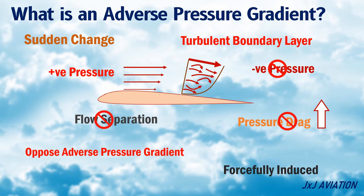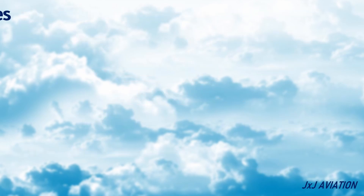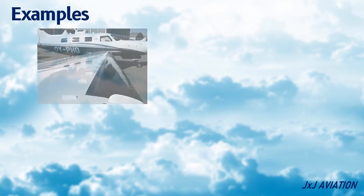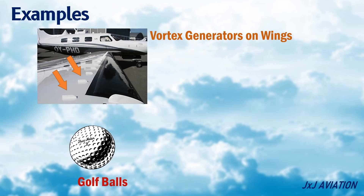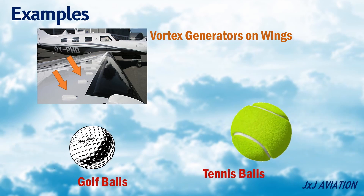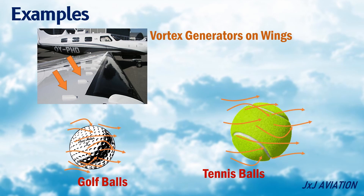Let's look at a few examples. On some wings there are vortex generators installed on the top surface. These vortex generators will create a turbulent boundary layer and prevent flow separation over the wing. Other examples are dimples on golf balls and the rough surface of tennis balls. The dimples and the rough surface will induce a turbulent boundary layer and reduce the drag force.